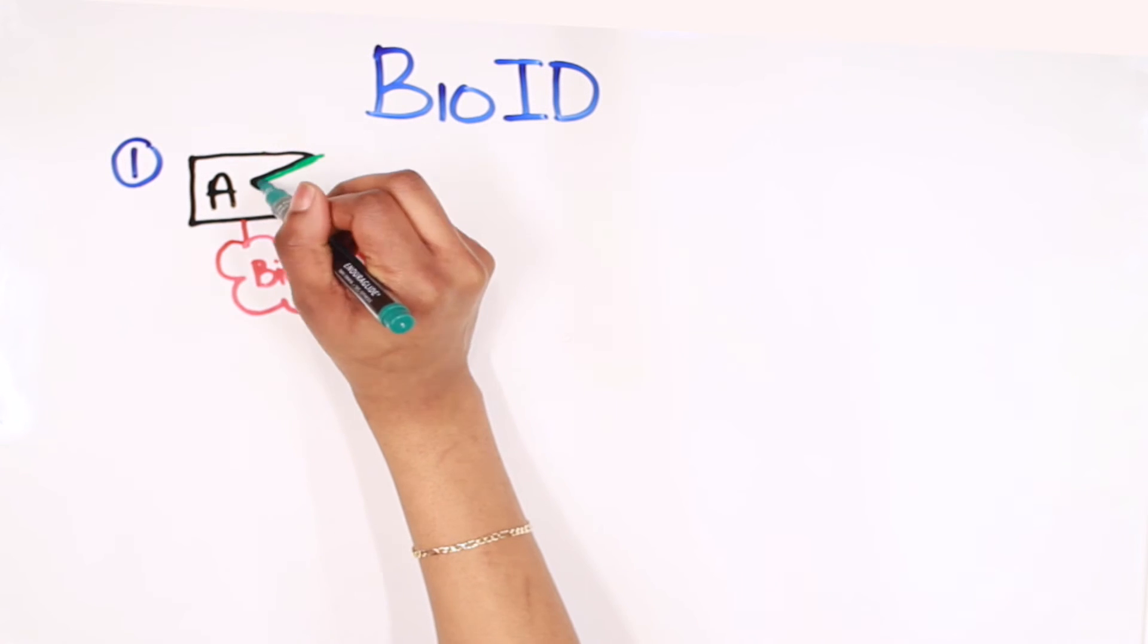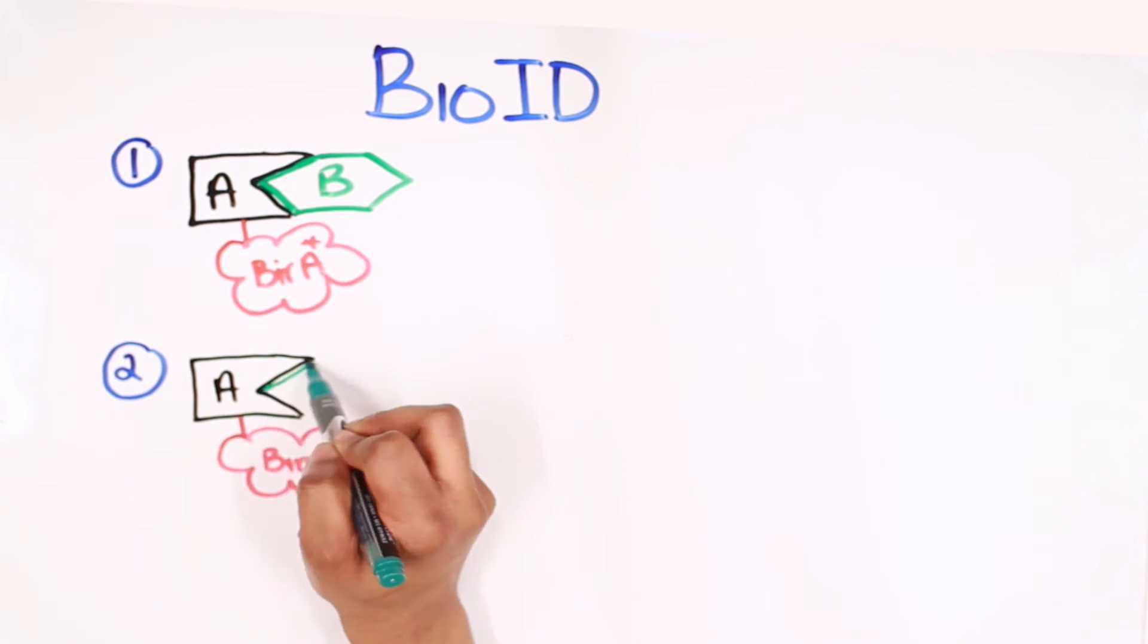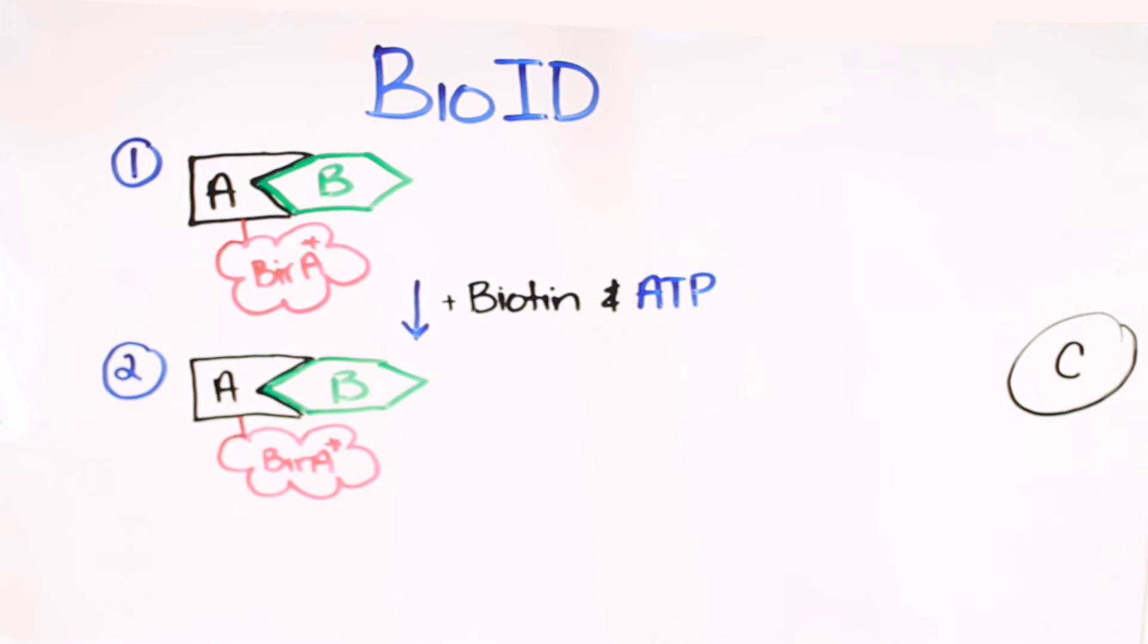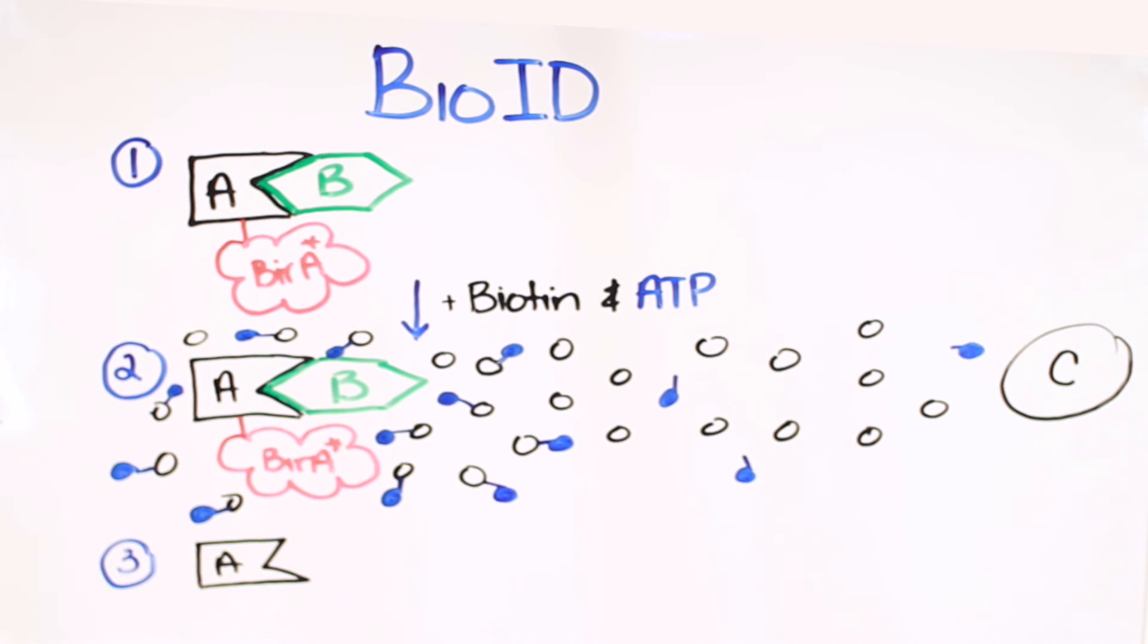Protein A has to be able to interact with its ligands, protein B, as it normally would in the cell. To distinguish proteins that are interacting with or are nearby protein A in the cell, as opposed to other proteins that are further away seen as protein C, biotin and ATP are added to the cell culture media. The presence of BirA star and ATP will convert biotin into its active form. The activated biotin molecule either gets attached to a lysine of a protein nearby or gets hydrolyzed, thus deactivated. So the closer a protein is to BirA star, the higher its chances are of getting biotinylated.